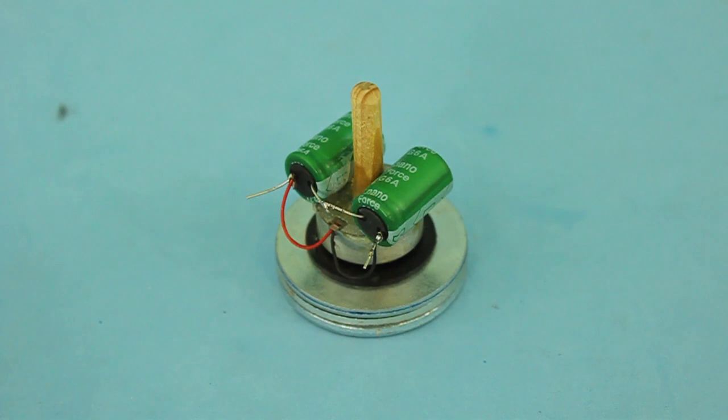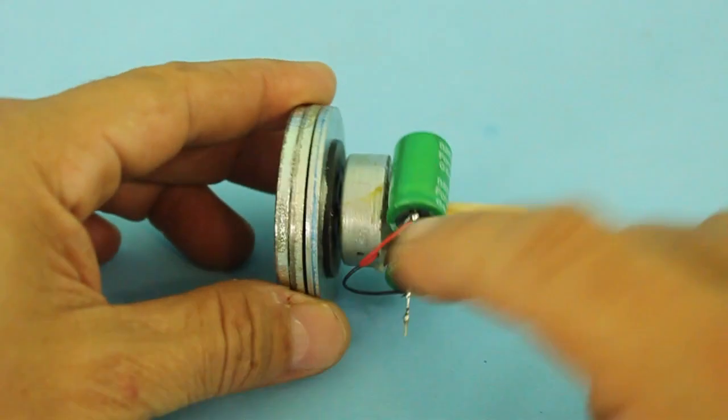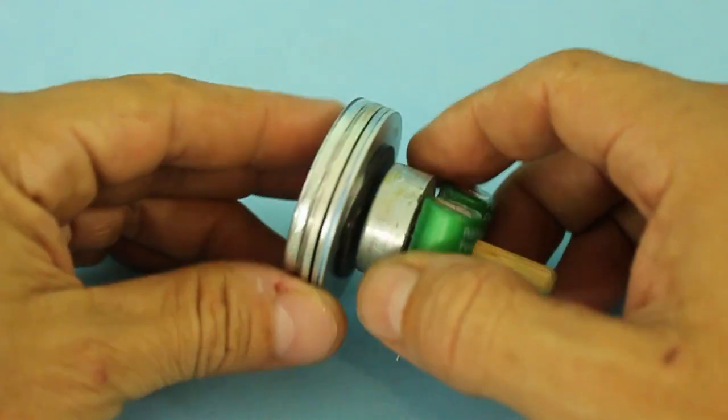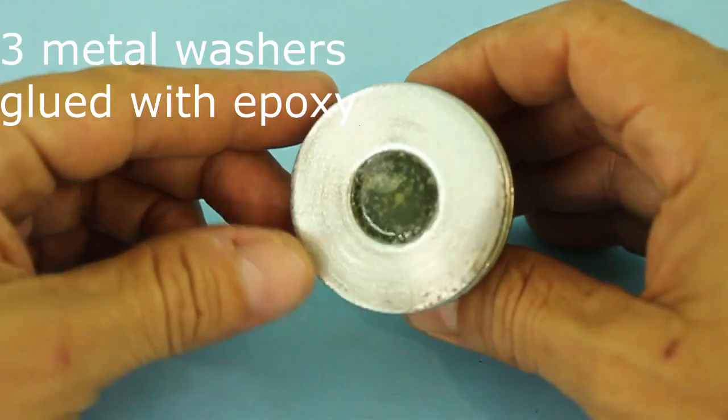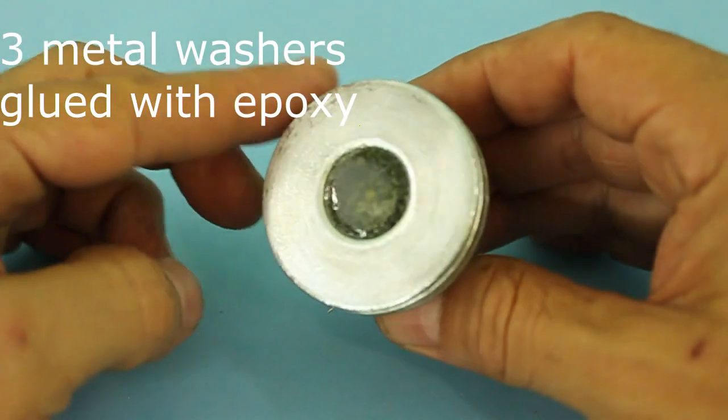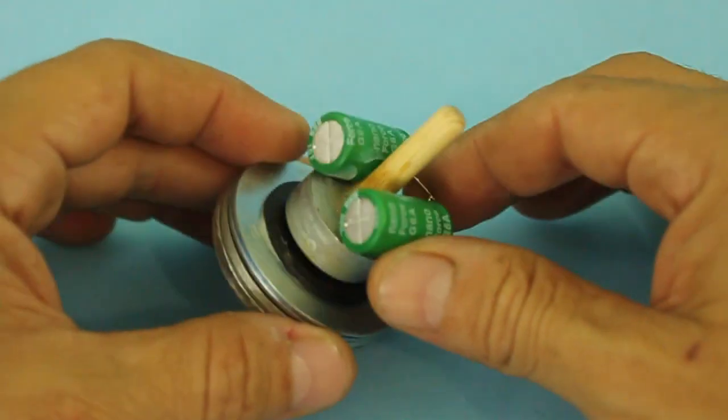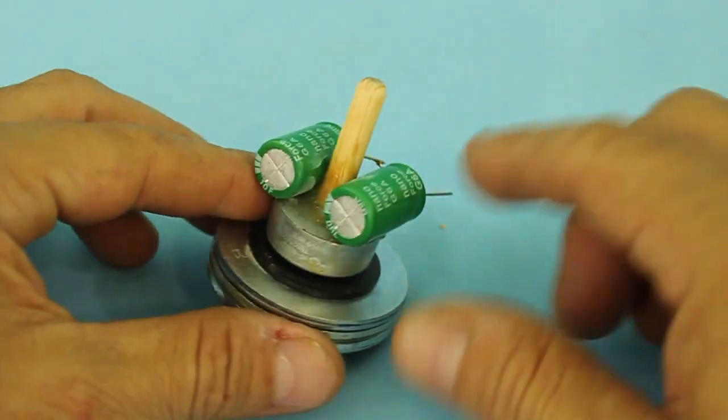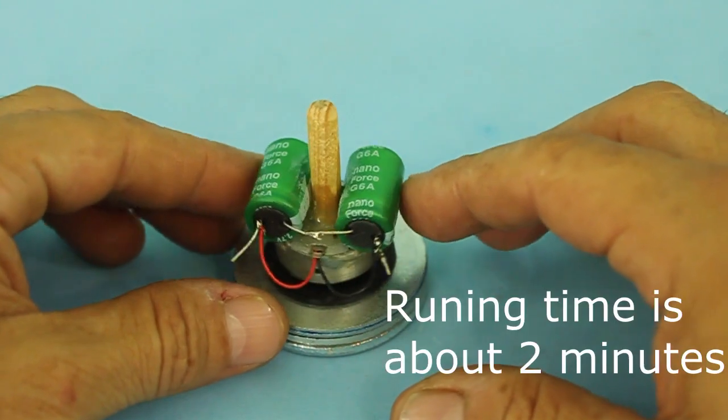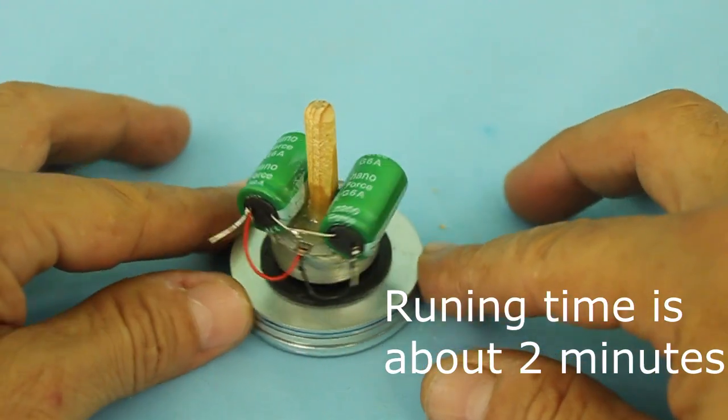The gyroscope is made with a CD-ROM motor and I have glued these large metal washers that form the rotating mass, and it's powered by two supercapacitors of 10 farads 2.7 volts each in series.